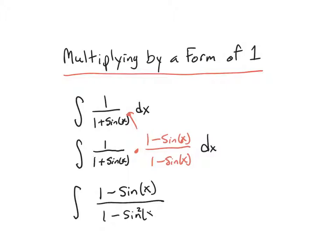This is just a difference of squares — what you get when you multiply two conjugate binomials together. And this result is a famous Pythagorean identity. We're going to change that into cosine squared of x on the next screen, so that's good news.